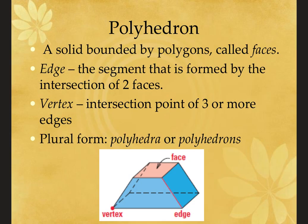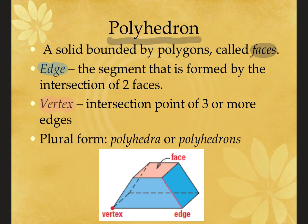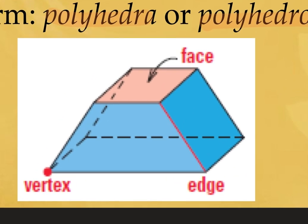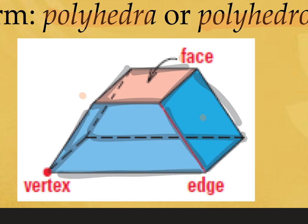A polyhedron is defined as a solid bounded by polygons. Each of the sides of a polyhedron are polygons, called faces. The edge is the segment formed by the intersection of two faces. The vertex (or vertices in plural form) is the intersection point of three or more edges. The plural of polyhedron is polyhedra or polyhedrons. The dashed edges are edges you wouldn't see if this was a solid figure, but they still exist.